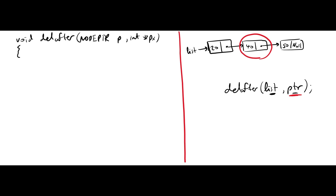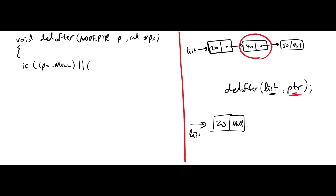The first thing is to check if the linked list is empty — meaning there is no node — or if there is only a single node. If we have nothing, how can we delete after? Similarly, if there's only a single node, there is nothing after it to delete. So the condition is: if p is equal to null OR p->next is equal to null, give an appropriate message and exit.